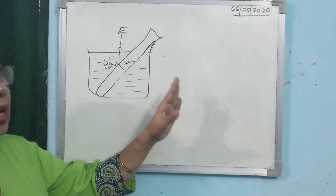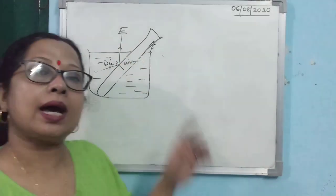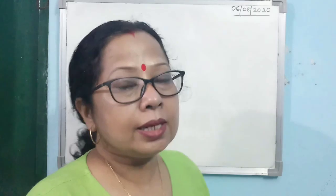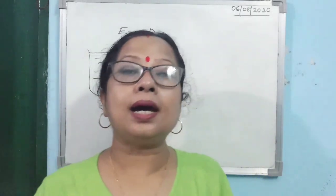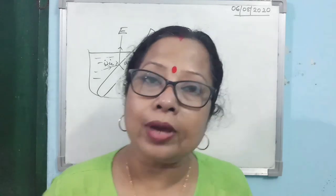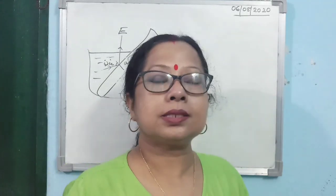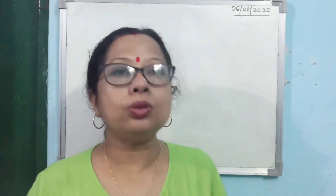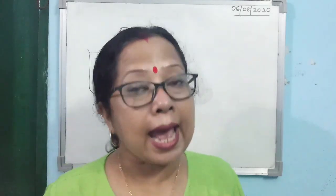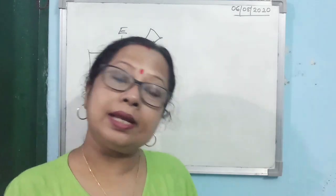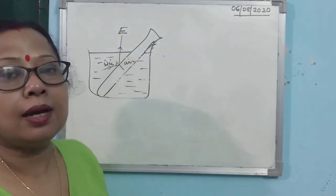To write the answer for this consequence, draw the diagram showing the glass-air interface and mark that the angle of incidence i is greater than the critical angle ic. Then write in your statement: it happens due to total internal reflection at the glass-air interface, as shown in the diagram.